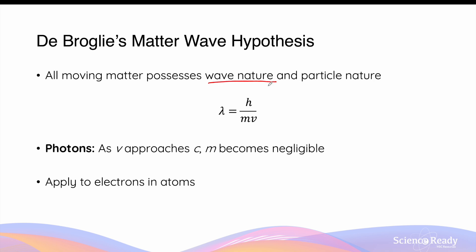Prior to this, the concepts of matter and wave were understood as separate subjects in the field of physics. De Broglie proposed that the wavelength of a matter wave is given by Planck's constant h divided by the momentum of the particle, which is in turn given by its mass multiplied by its velocity.